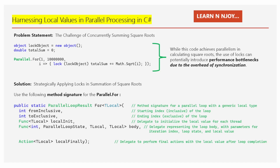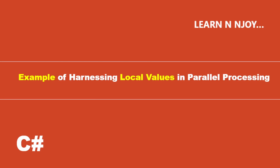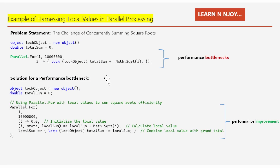Now you should understand how local values play a crucial role in parallel processing to improve performance. Here is the same problem statement — the challenge of concurrently summing square roots — and the solution. Instead of applying a lock to every individual summation, it should be applied only around the final aggregation of all locally calculated sums.